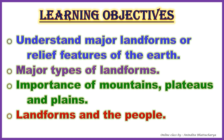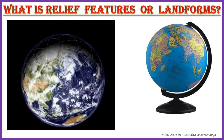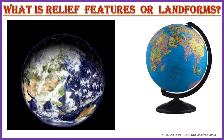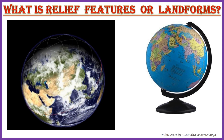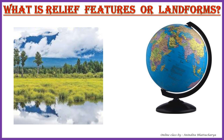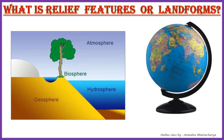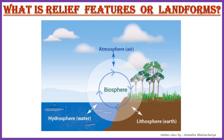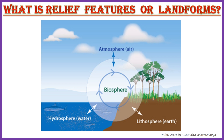Our earth is unique because it is the only planet known so far to have plant and animal life on it. The environment of our planet is different from other known celestial bodies. Scientists describe the earth in terms of systems called spheres — they call the land, water, and air realms the lithosphere, hydrosphere, and atmosphere respectively.